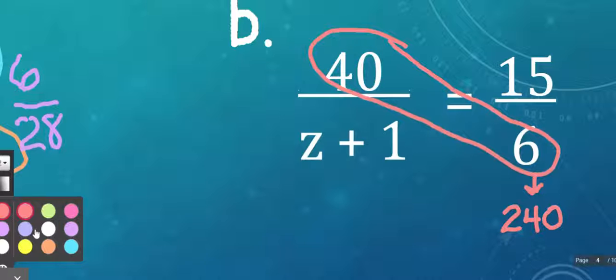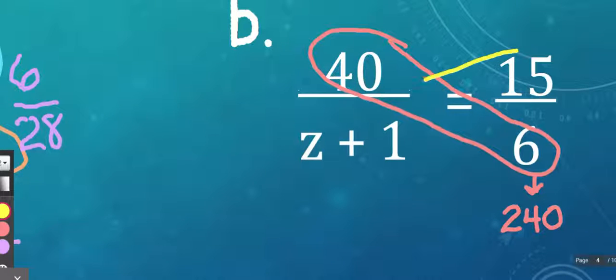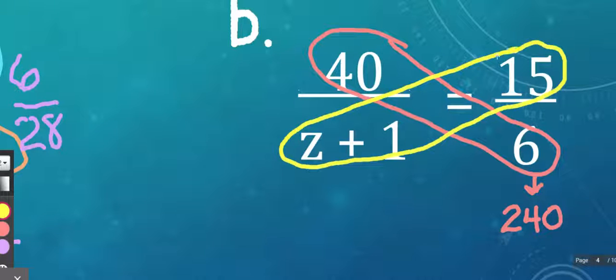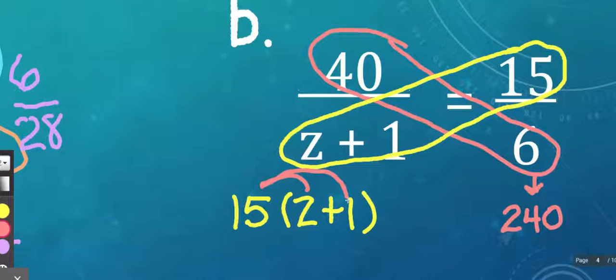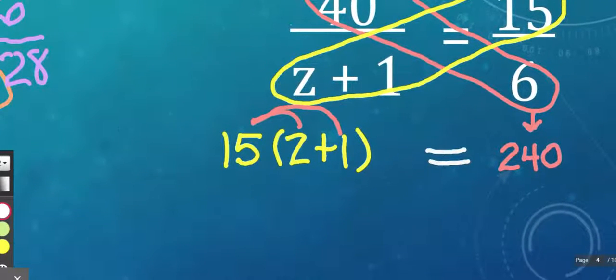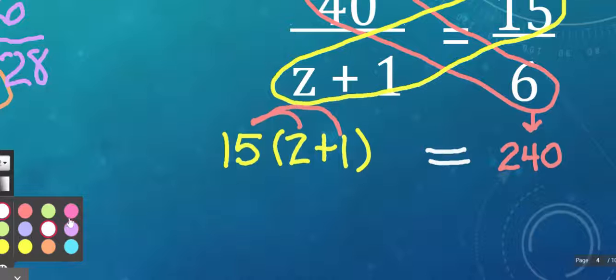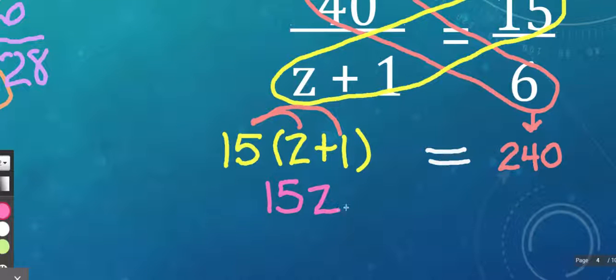And now the tricky part is when we get to this step that has Z plus 1 times 15. But all this means is that we're taking that product Z plus 1, and we are multiplying it times that numerator that was 15. So this is a cherry bomb where we would distribute the 15 to both of those terms. So when I distribute, I'm going to get that 15 times Z is just 15Z. And then 15 times a positive 1 is just positive 15.